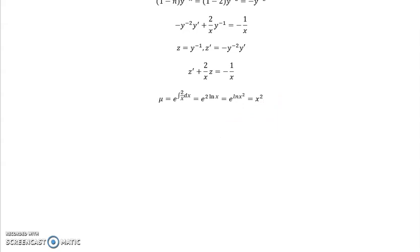So now we're going to multiply our equation here, everything by x². So we get x² z prime, and then 2 over x times x² is going to give us 2x times z. And then on this side of the equation, 1 over x times x² is going to give us x, and so this becomes negative x.